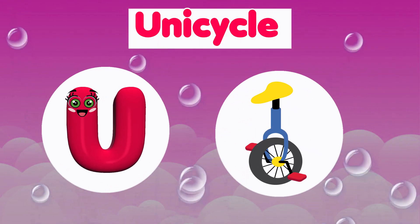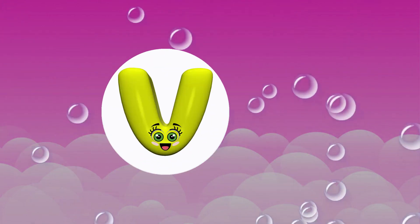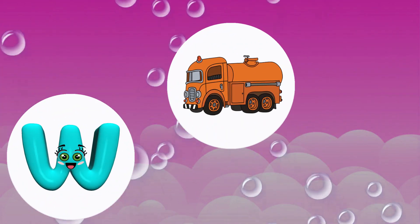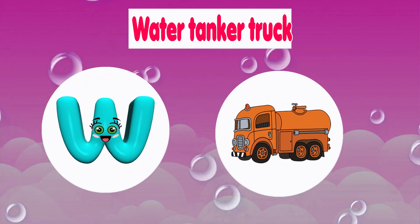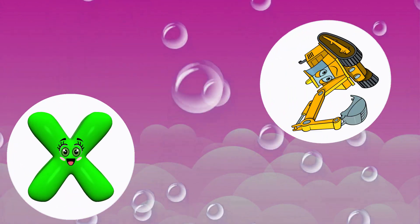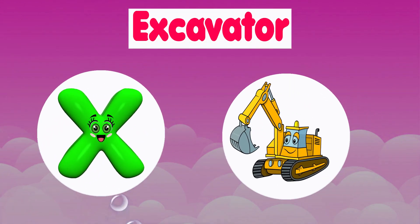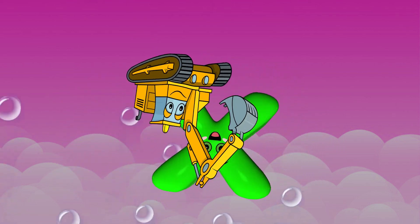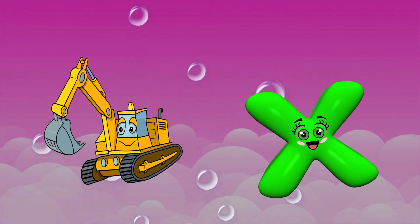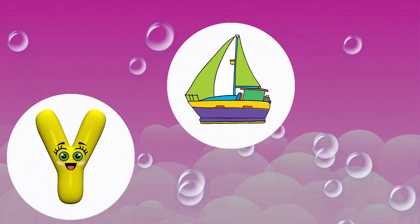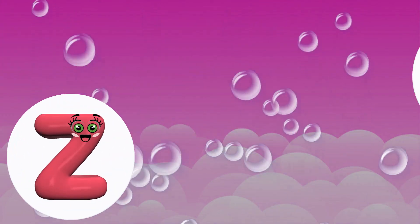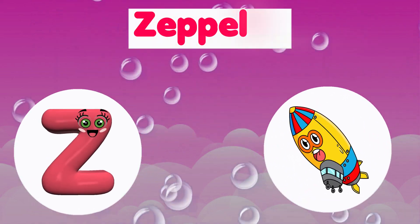U is for Unicycle. U, U. Unicycle. V is for Van. V, V. Van. W is for Water Tanker Truck. W, W. Water Tanker Truck. X is for Excavator. X, X. Excavator. Y is for Yacht. Y, Y. Yacht. Z is for Zeppelin. Z, Z. Zeppelin.